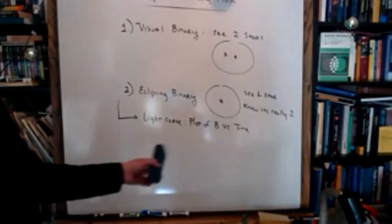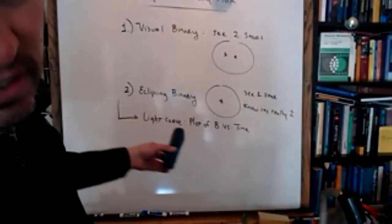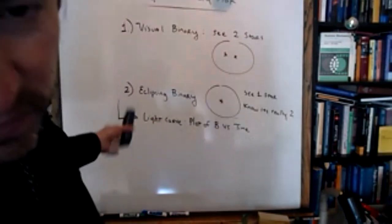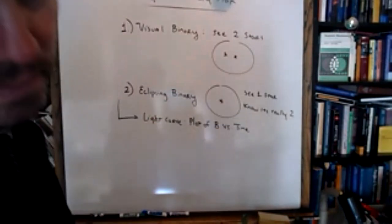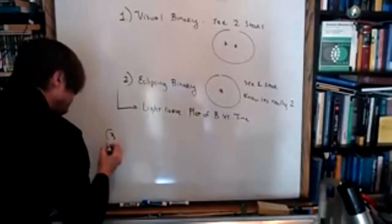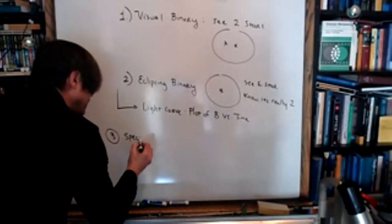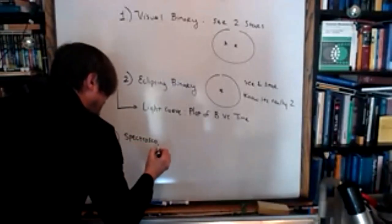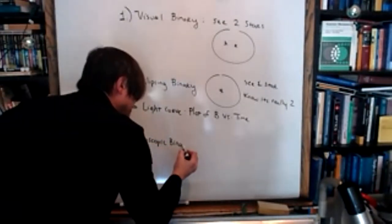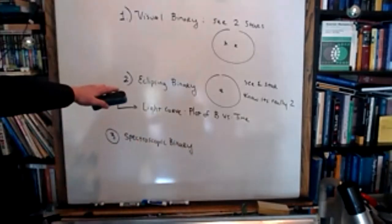I'm not going to explain the light curve to you now — I'm going to show it when we get to the lab. The third type of binary star is called a spectroscopic binary. Like the eclipsing binary, it's an unresolved pair — once again you can only see one star, but you know it's two.